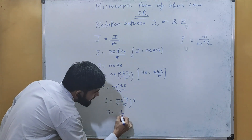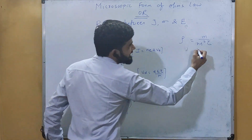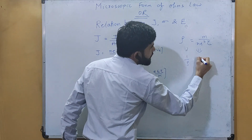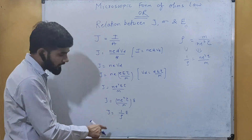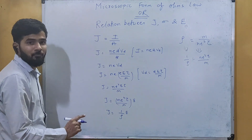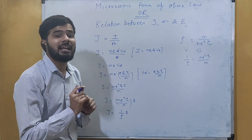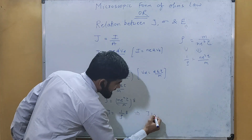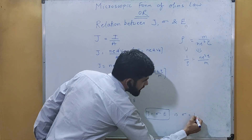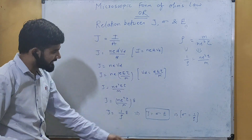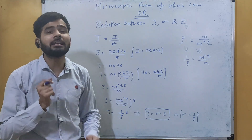So we can write j equals (1/rho) multiplied by E, since n·e²·τ/m equals 1/rho. The reciprocal of electrical resistivity, 1/rho, is called electrical conductivity sigma. Therefore, j equals sigma·E. This is the microscopic form of Ohm's law — the relation between j, sigma, and E.